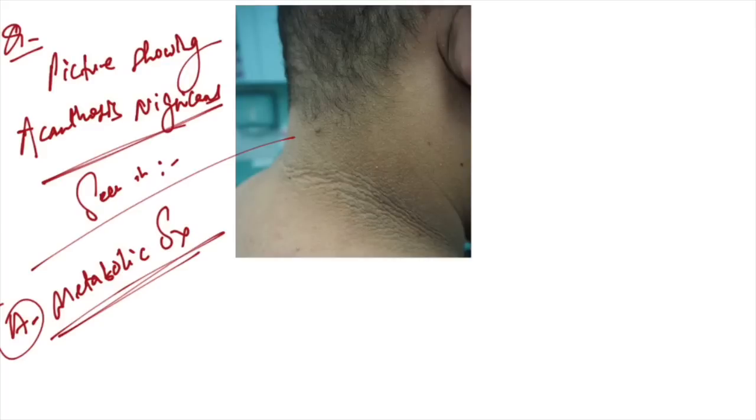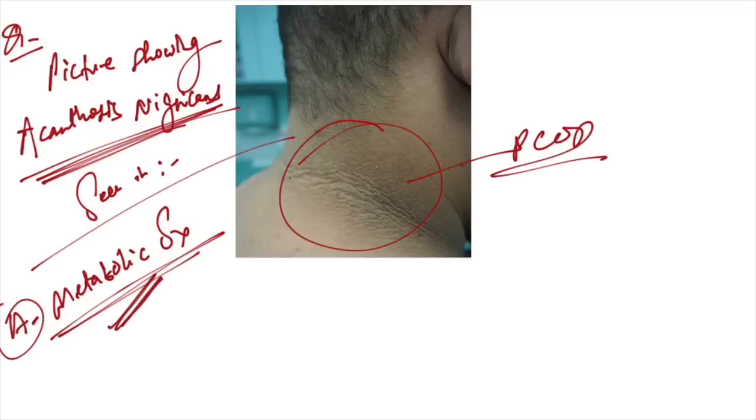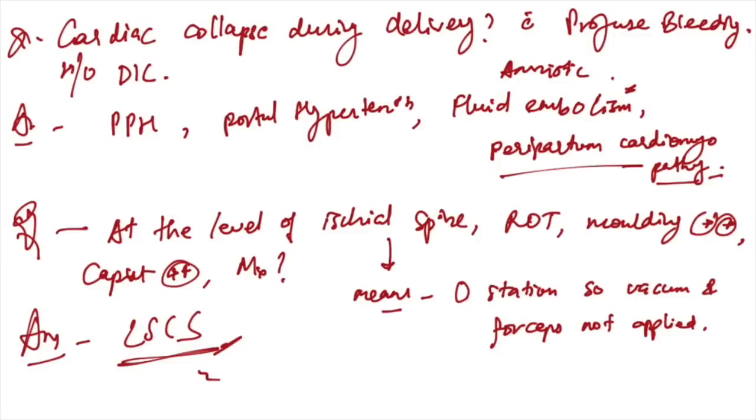This picture shows acanthosis nigricans, seen in mostly PCOD or metabolic syndrome. So the answer is metabolic syndrome. Cardiac collapse during delivery with profuse bleeding and history of DIC - what can be the cause?